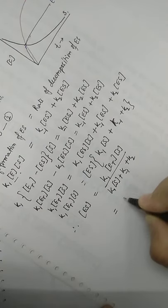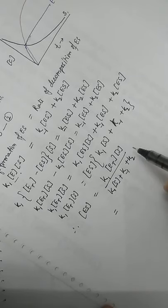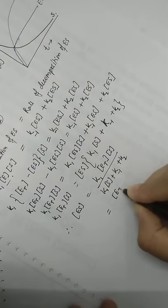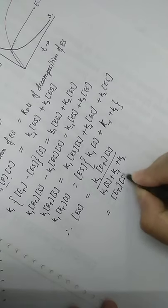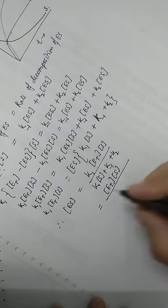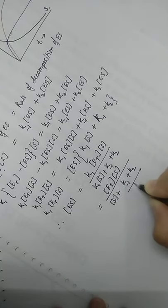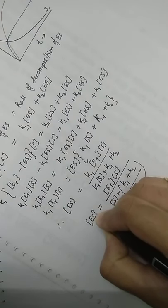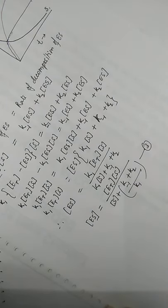On further simplification, by dividing the numerator and denominator by k1, we get a simplified equation. The numerator becomes [E]T[S] and the denominator becomes substrate concentration plus (k-1 + k2) divided by k1. Let's call this equation three.